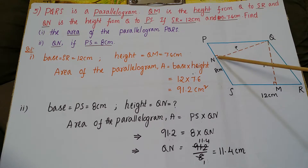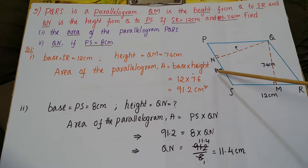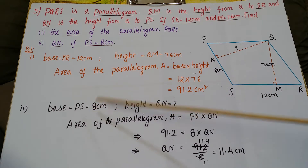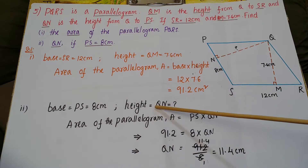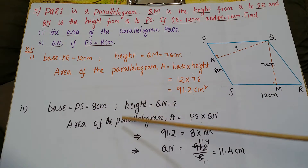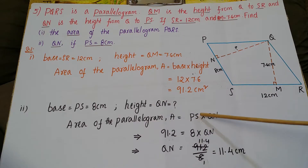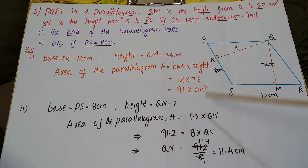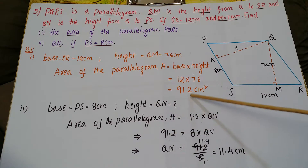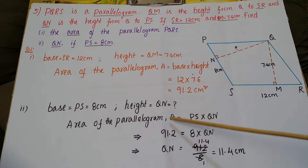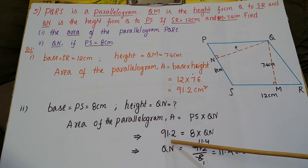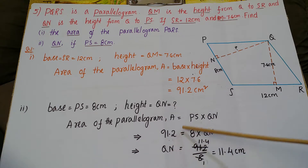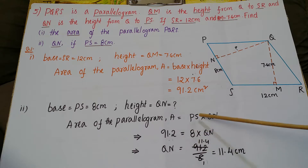For the second part, we have to calculate the altitude QN if the base PS is 8 centimeters. The area of the parallelogram uses the same formula: base into height. We already calculated the area as 91.2, so 91.2 is equal to PS, which is 8, into QN.